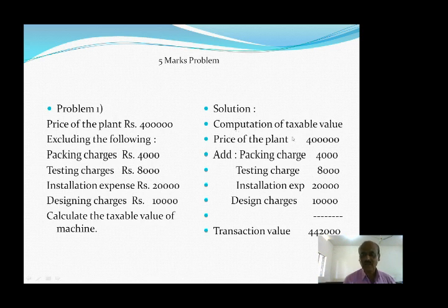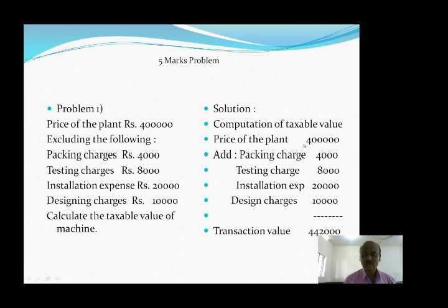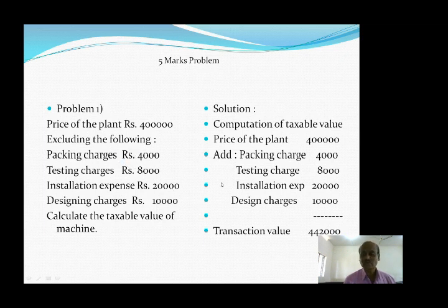Computation of taxable value: make two columns — particulars column and amount column. The first item to be taken is the price of the plant. Here, the sales value is given. As I told you while discussing the format, when the sales value is given and it is not including the following items, those items are to be added. It is very clearly stated in the problem that 4 lakh is excluding these items. So the first item is price of the plant: rupees 4 lakh.